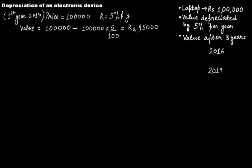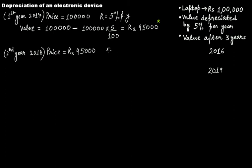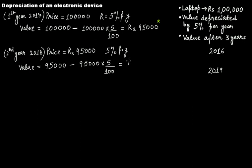This 95,000 acts as the principal for the next year. At the beginning of 2018, the value is rupees 95,000. Again, the rate of depreciation is 5% per year, similar to compounding annually. So the value at the end of 2018 will be 95,000 minus 5% of 95,000, giving rupees 90,250.